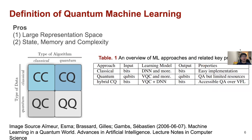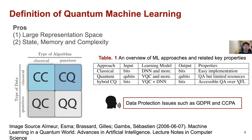We do some review about those properties. For example, in the classic approach the input and output are classical, and the learning model can be really data-efficient. For the quantum algorithm, the input and output are in quantum format, like the variational quantum circuit, but it's hard to access sufficient resources. The hybrid classical-quantum model can access quantum advantages via a new architecture we will discuss in the next slide. Another concern is whether we can really improve aspects of data processing, such as data protection issues including GDPR and CCPA.